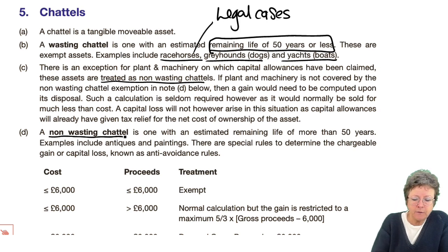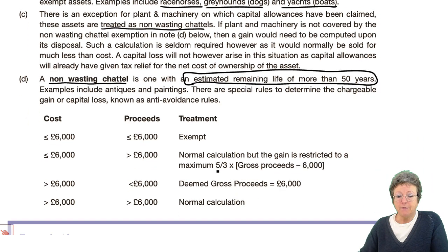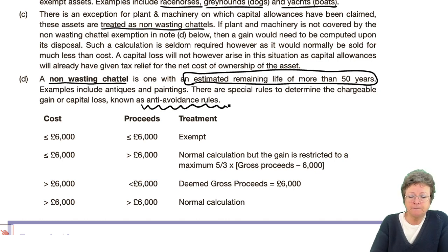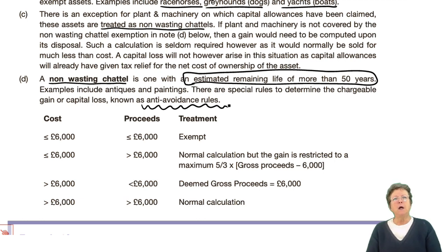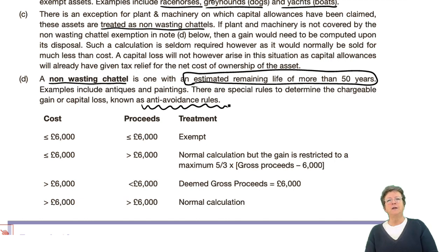A non-wasting chattel has an estimated remaining life of more than 50 years, and there are special rules for those — they are called anti-avoidance rules. For example, say you've got a massive capital gain. As you've seen from earlier in the chapter, you can offset current year losses against that gain. You may have non-wasting chattels that you want to dispose of, selling them at a price less than they are worth in order to make losses to set them off, because current year losses can be set off against current year gains. So these are anti-avoidance rules and legislation.